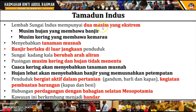Lembah Sungai Indus mempunyai dua musim yang ekstrim. Semasa musim hujan, hujan yang turun akan membawa kepada banjir. Manakala semasa musim kering, ia akan membawa kepada kemarau, di mana kering kontang hingga tiada hujan. Sebab itulah dikatakan ia mempunyai dua musim yang ekstrim. Banjir dan kemarau ini akan menyebabkan tanaman yang diusahakan penduduk musnah. Banjir juga berlaku di luar jangkaan, dan kadang-kadang sungai boleh berubah arah aliran. Pusingan musim kering dan hujan menjadi tidak menentu, menyebabkan penduduk tidak dapat meramal cuaca.